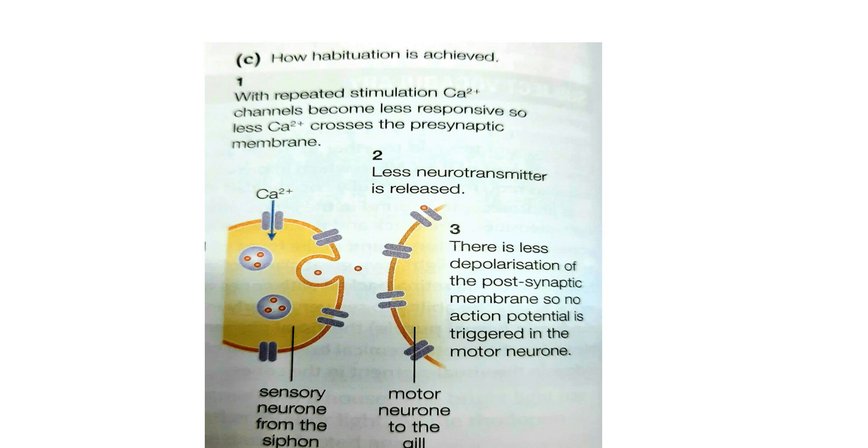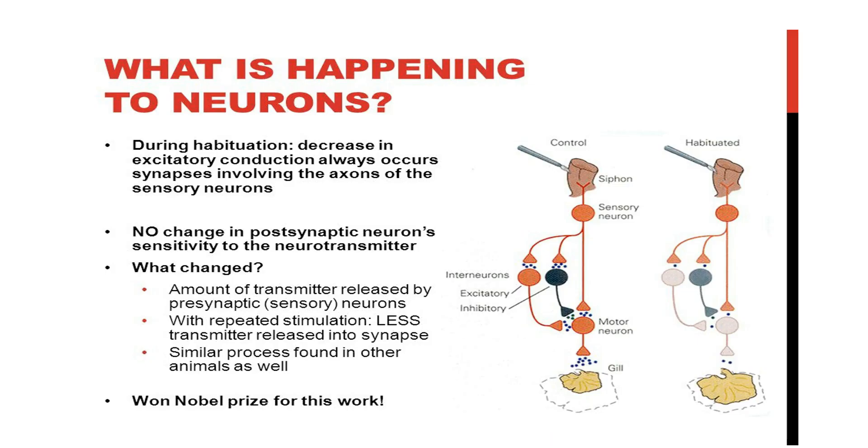If less neurotransmitters are released into the synaptic cleft, this means less neurotransmitters binding on the receptors here. Less sodium channels will open on the postsynaptic membrane and less depolarization in the postsynaptic membrane. This means that there is no action potential will be triggered in the postsynaptic membrane, and here where the message stops, usually in motor neurons.